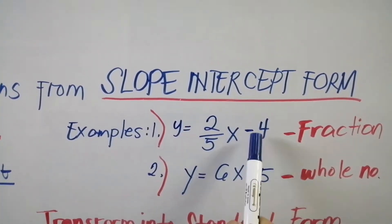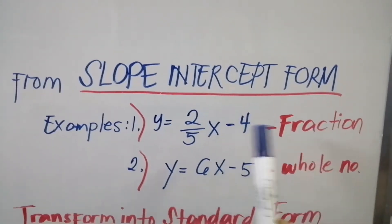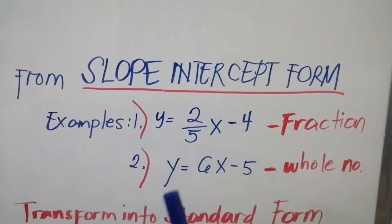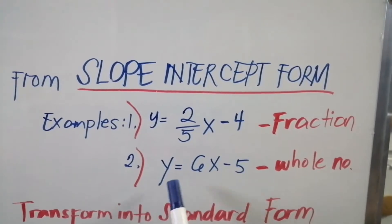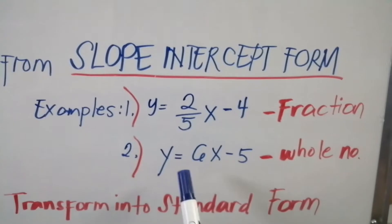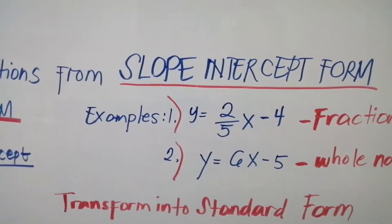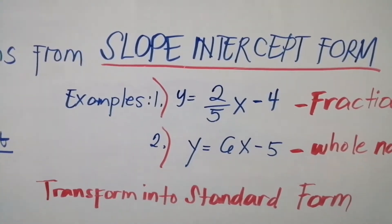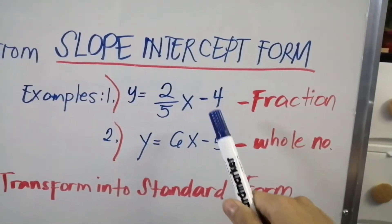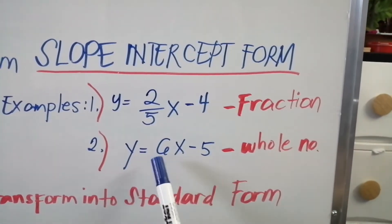In this equation, for example y equals 2/5x minus 4, written in fraction form, our slope is 2/5x. In this sample, slope 6x is written as a whole number, which means there is no denominator. So there are two steps on how to solve the slope-intercept form transforming to standard form — one written in fraction form and one in whole number.